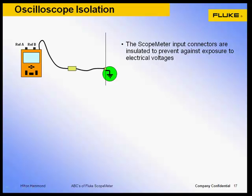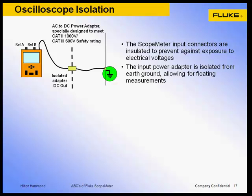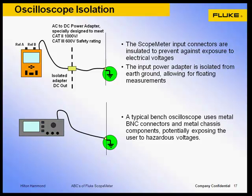The Fluke Scope Meter test tool includes insulated BNC input connectors and isolated power adapters that provide a safe means to float the oscilloscope input above earth ground. Both input channel A reference and channel B references are isolated from earth ground. On some Fluke Scope Meter models, like the 190C series or 220 series, the input A reference and input B reference are also electrically isolated from each other, making it possible to perform differential measurements without the need for an external differential amplifier or specialized accessory.